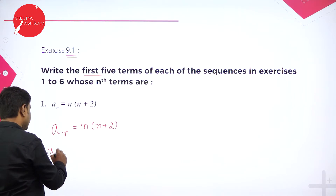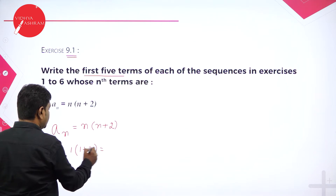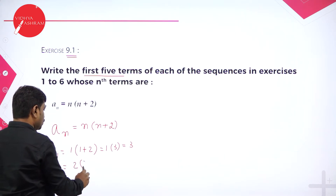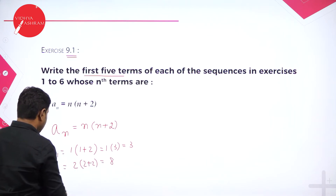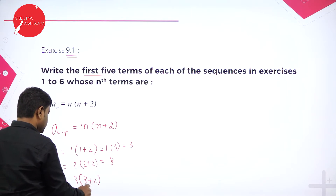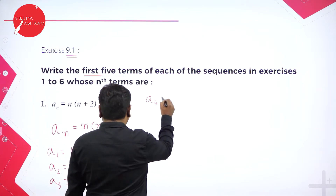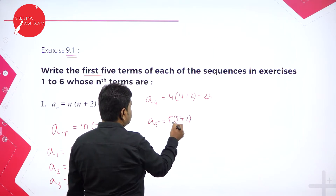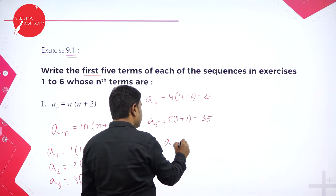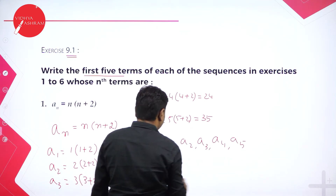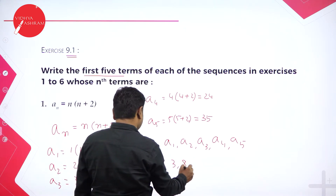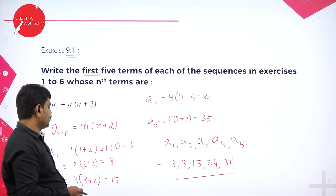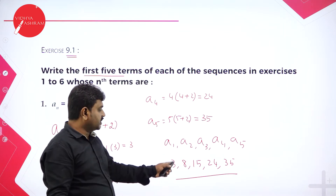They want the first 5 terms. a₁ = 1×(1+2) = 1×3 = 3. a₂ = 2×(2+2) = 2×4 = 8. a₃ = 3×(3+2) = 3×5 = 15. a₄ = 4×(4+2) = 4×6 = 24. a₅ = 5×(5+2) = 5×7 = 35. Therefore the first 5 terms are 3, 8, 15, 24, 35. This forms a sequence obeying the rule a_n = n(n+2).